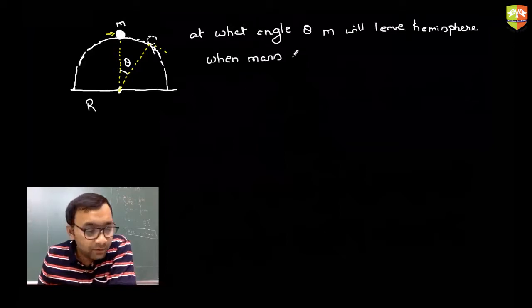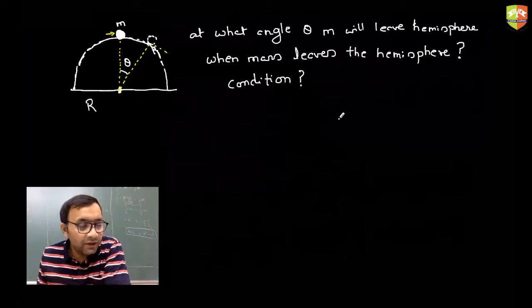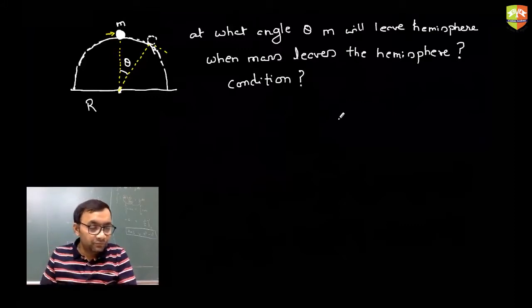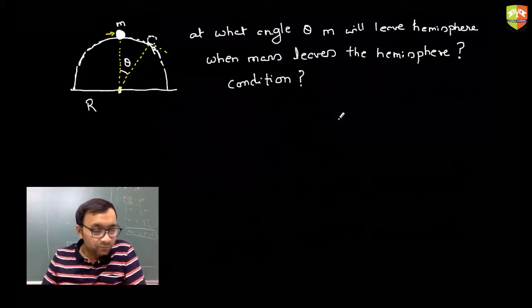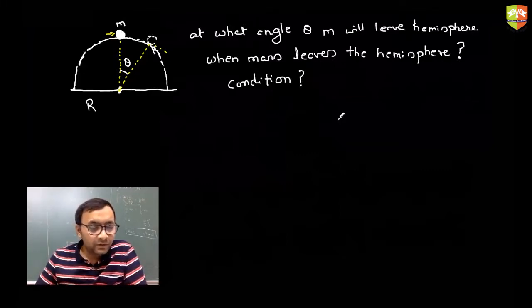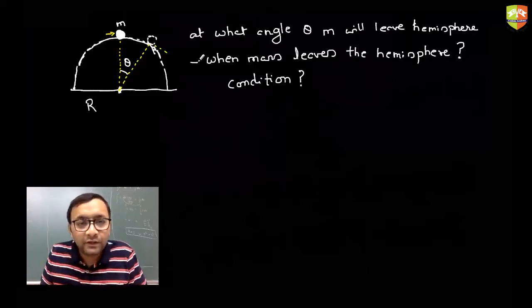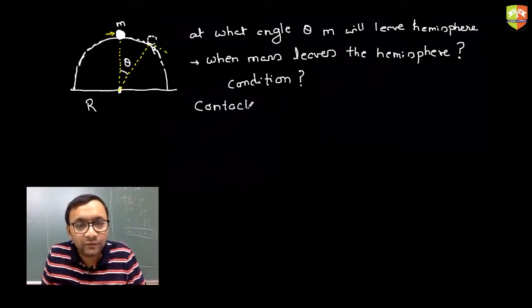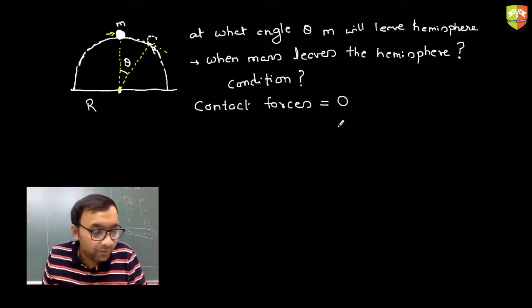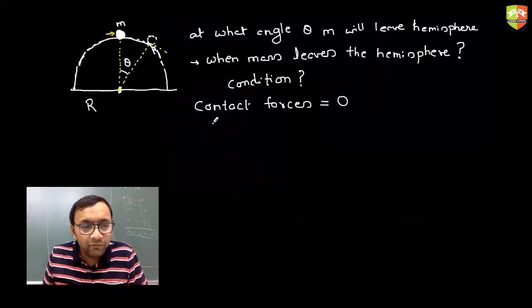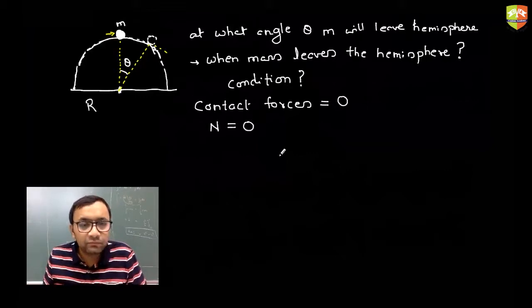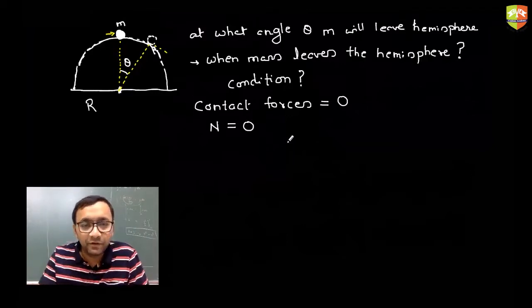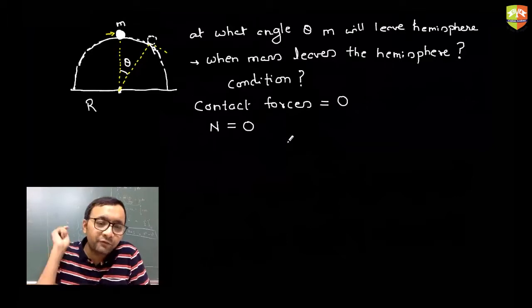The condition when the mass leaves the hemisphere is that all the contact forces go to zero because it is losing contact. The only contact force here is the normal reaction. So when the normal reaction becomes zero, that is the point when it leaves the hemisphere. Even friction force will become zero at that moment.